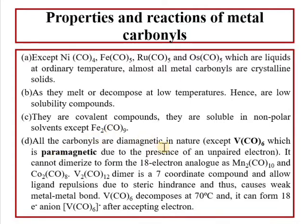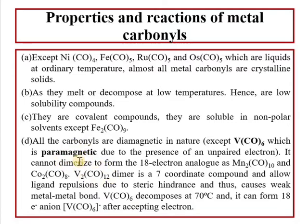اگر ہم سارے carbonyls کو دیکھیں تو یہ diamagnetic ہوتے ہیں نیچر میں, except vanadium کا carbonyl. اور اس لیے vanadium کوشش کرتا ہے کہ یا تو یہ dimer بنا لیتا ہے یا یہ V(CO)6 minus easily form کرتا ہے. کیونکہ یہ paramagnetic ہے، اس میں unpaired electron ہوتا ہے، اور یہ اپنے کو dimerize کرتا ہے جس سے 18 electron analog بنا سکے.